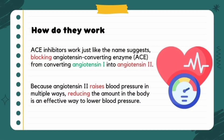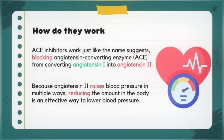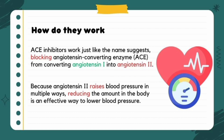Talking about the mechanism of action of ACE inhibitors, they are competitive inhibitors of angiotensin-converting enzyme and prevent the conversion of angiotensin-1 to angiotensin-2. Angiotensin-2 acts as a potent vasoconstrictor, so when it is inhibited, ACE inhibitors can reduce blood pressure by dilating vessels and decreasing aldosterone secretion.